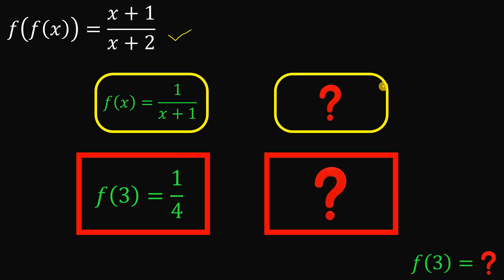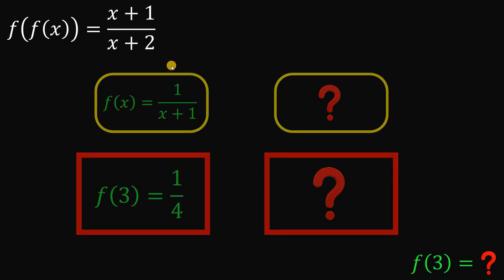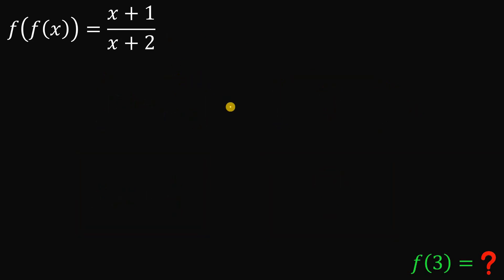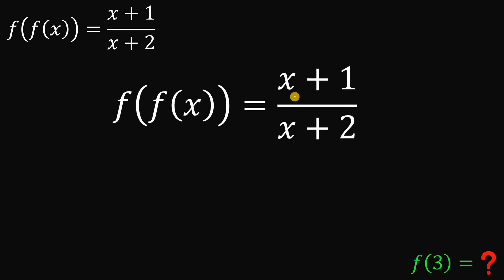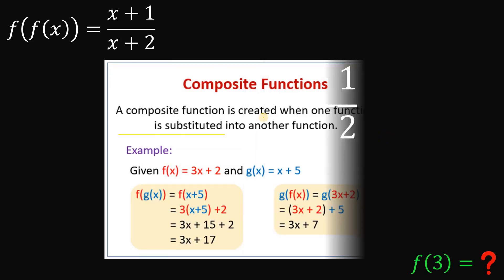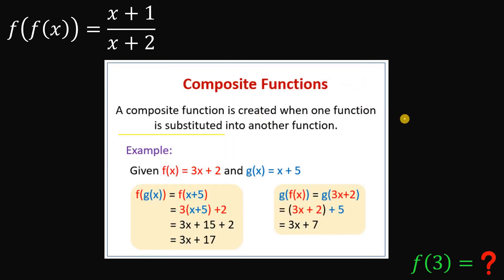Let's begin. Our given is f of f of x equals x plus one over x plus two. The first question is: what is f of f of x? This is what we call a composition of functions — a composition is created when one function is substituted into another function.